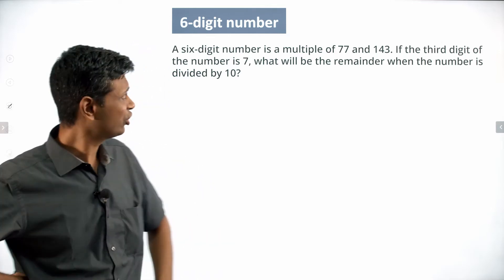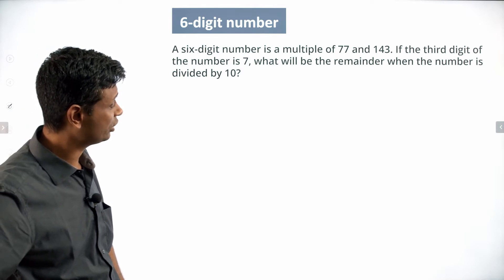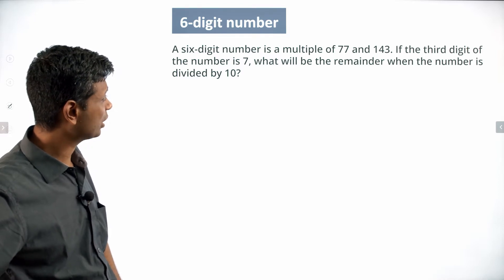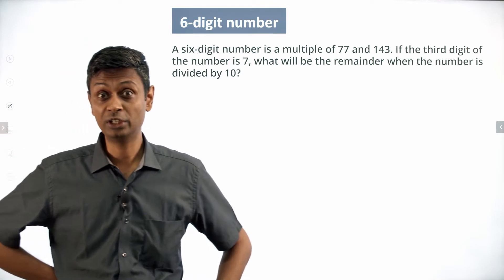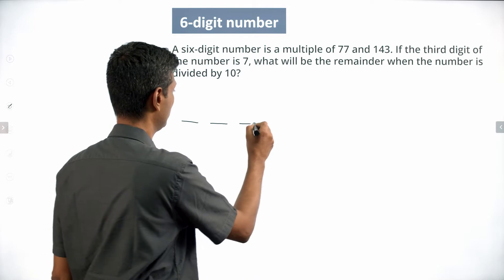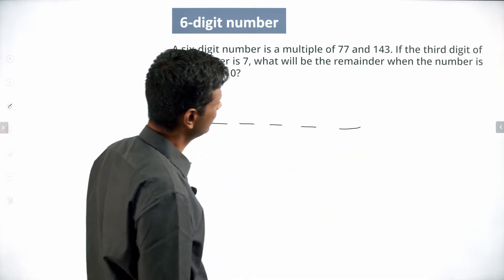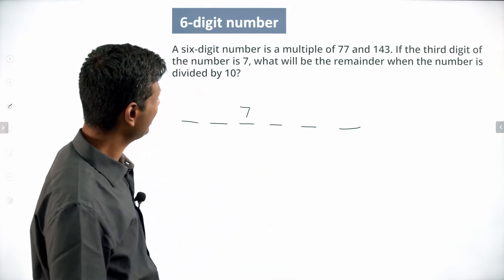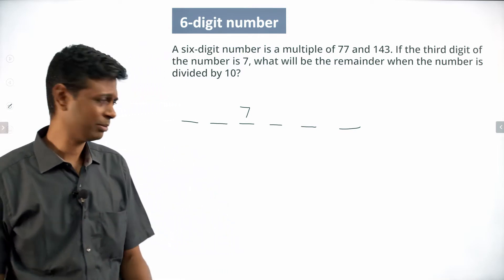A six-digit number is a multiple of 77 and 143. If the third digit of the number is 7, what will be the remainder when the number is divided by 10? Really tough-looking question. Let's think about the six-digit number — 1, 2, 3, 4, 5, 6. The third digit is 7. What do we need to find? The remainder when the number is divided by 10.